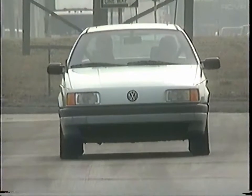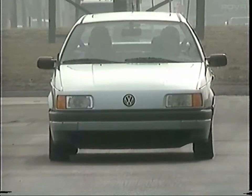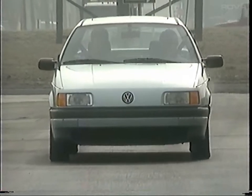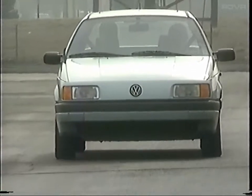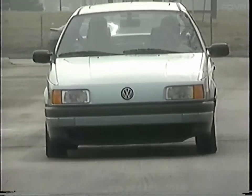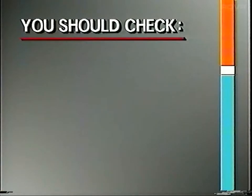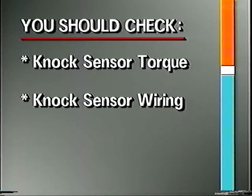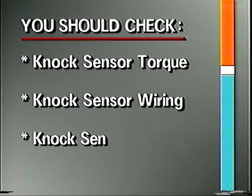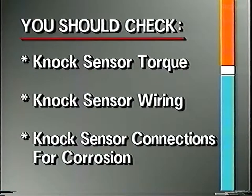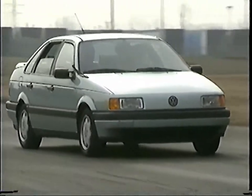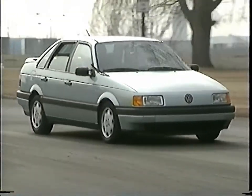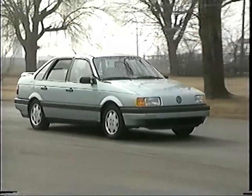If the measured timing is more than negative 6 degrees retarded, it's an indication the timing is retarding when it shouldn't be. Check for proper knock sensor torque, proper knock sensor wiring, and check the knock sensor connections for corrosion. If you find a problem with the knock sensor system, repair it and repeat the acceleration test.